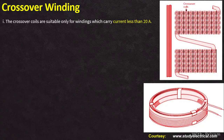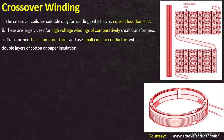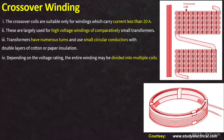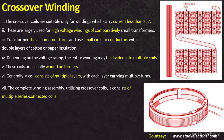Crossover coils are suitable for windings which carry current less than 20 amperes. These are largely used for high-voltage windings of comparatively small transformers. These transformers feature numerous strands employing conductors with small circular cross-sections, covered with double layers of cotton or paper insulation. Depending on the voltage rating, the entire winding may be divided into multiple coils, usually wound on formers. Generally, a coil consists of multiple layers with each layer carrying multiple turns. The conductor can be round or a rectangular strip, and the complete assembly of crossover coils consists of multiple coils connected in series.